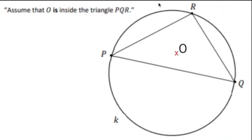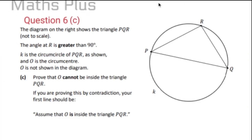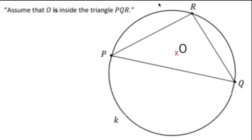Part C, we have to do a proof and we're going to assume that a point O is inside and we have to prove by contradiction. In this case, we're given some other information as well. The corner point at R must be greater than 90 degrees. Let's put it all together.